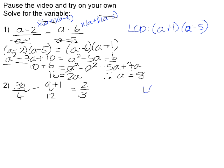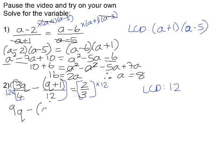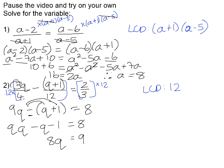For question 2, the lowest common denominator is 12, because the lowest common multiple of 4, 12, and 3 is 12. So we multiply the whole of both sides by 12. 12 times 3q over 4: 4 goes into 12 three times, giving 9q. 12 goes into 12 once, leaving negative (q+1) — and the brackets are important because of that negative. 3 goes into 12 four times, giving 8. So we have 9q minus q minus 1 equals 8, which gives 8q equals 9. Dividing both sides by 8, q equals nine-eighths.